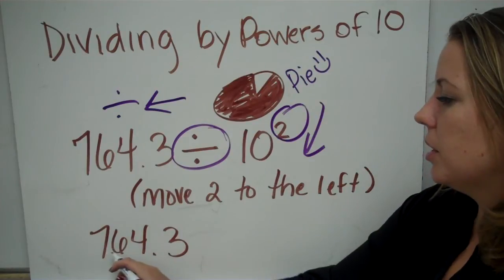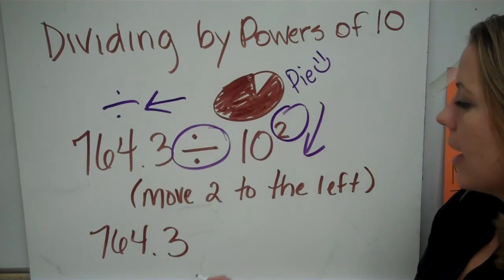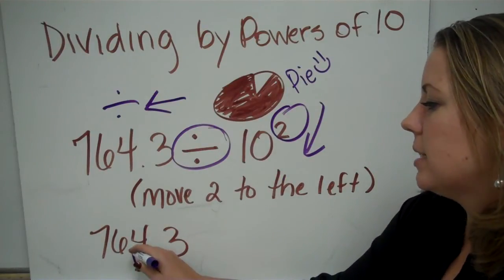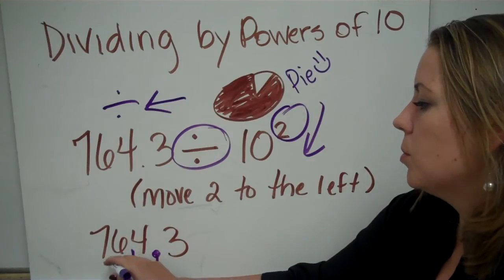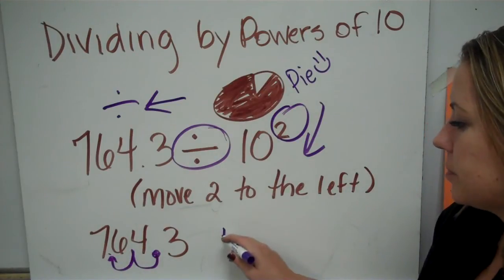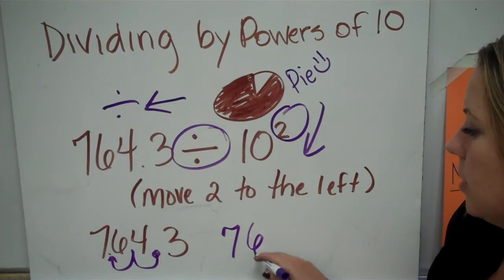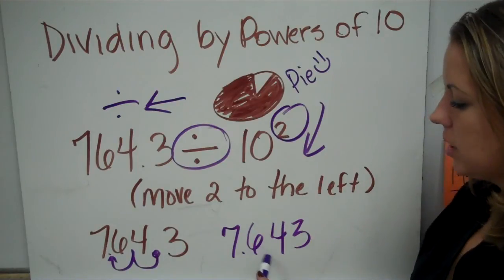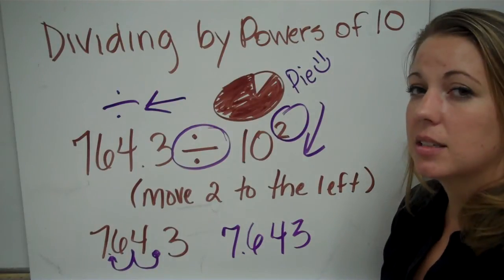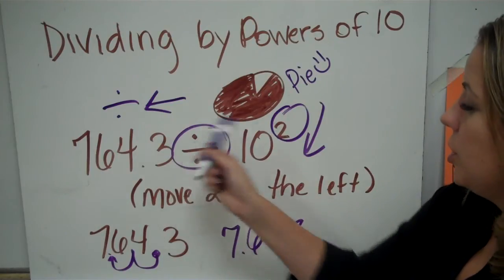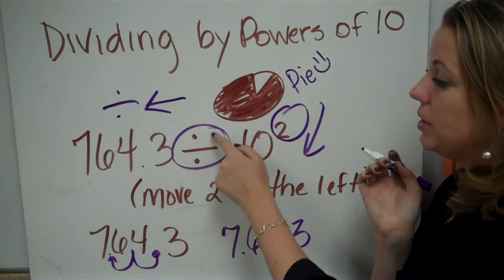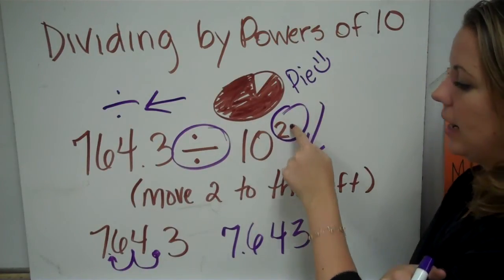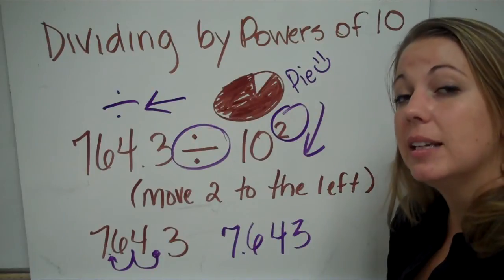The question is seven hundred sixty-four and three tenths divided by ten to the second power. This two tells us to move two places to the left. Here's our number: 764.3. We pick up the decimal and move it one time — between the six and the four — and one more time — between the seven and the six. Rewriting it, our new number is seven and six hundred forty-three thousandths.